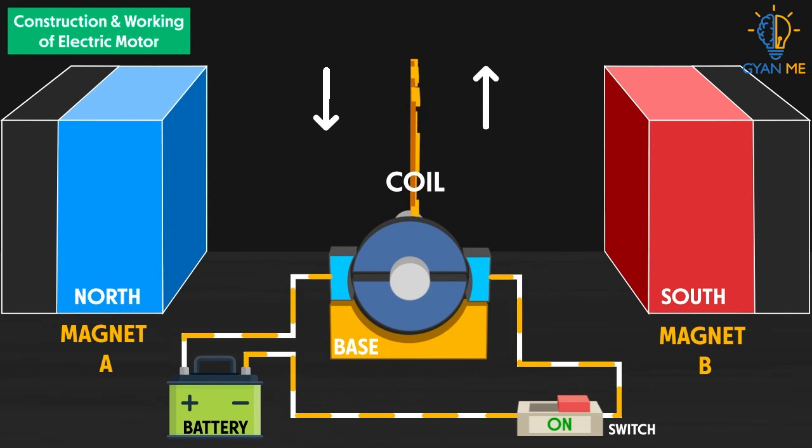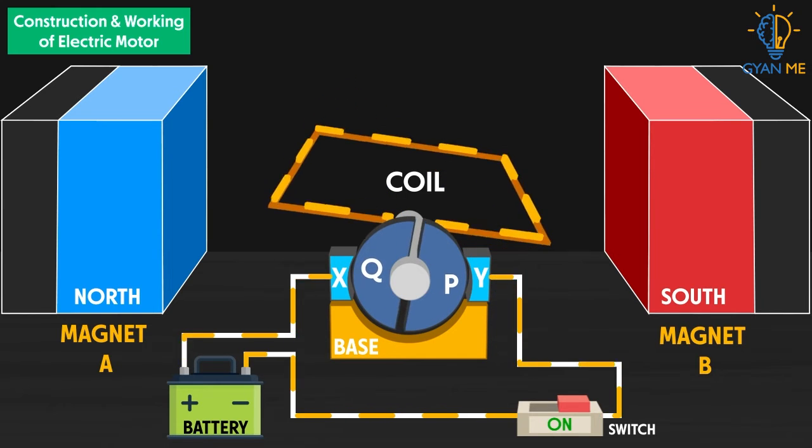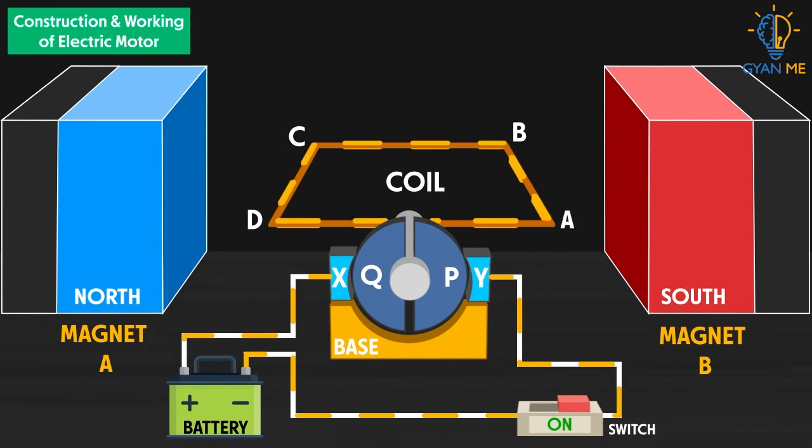At half rotation, the coil reaches the vertical position and brushes X and Y are on the gaps between two half rings. The coil continues rotating and Q makes contact with brush X and P with brush Y. The current now flows from D to C and the force acting on CD is downwards. On the other side of the coil, the current flows from B to A and the force acting on AB is upwards.